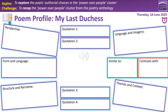That brings us to our poetry profiles. As last time, you're going to profile this poem using the same boxes: perspective, form, language, structure and narrative, four quotations, language and imagery, themes and context, similar to and contrasts with. You can add these boxes to your annotated copy of the poem or fill them in on the printout. This will become a clear summary to help you revise for exams. About five minutes ideally on this.